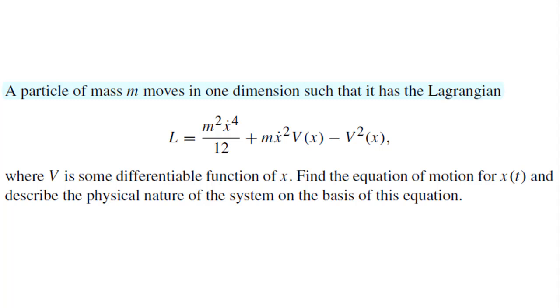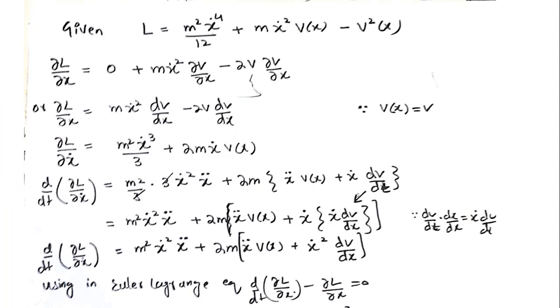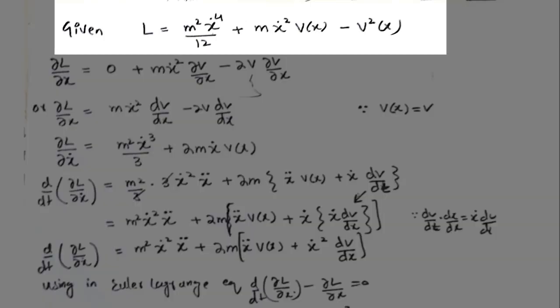So let us start. Now you can see this Lagrangian function and all we have to do is differentiate it partially once with respect to x and once with respect to x dot.